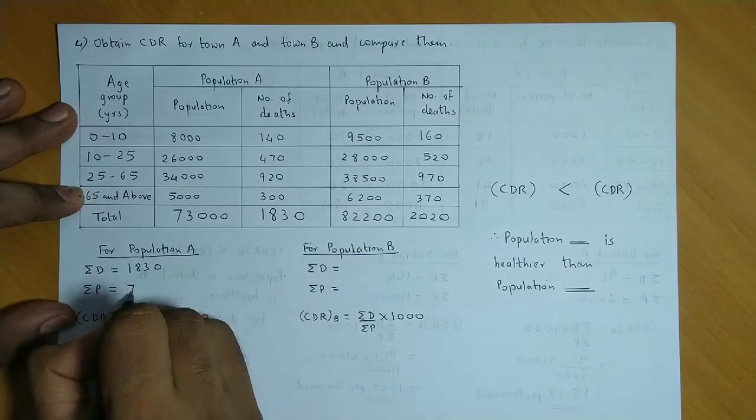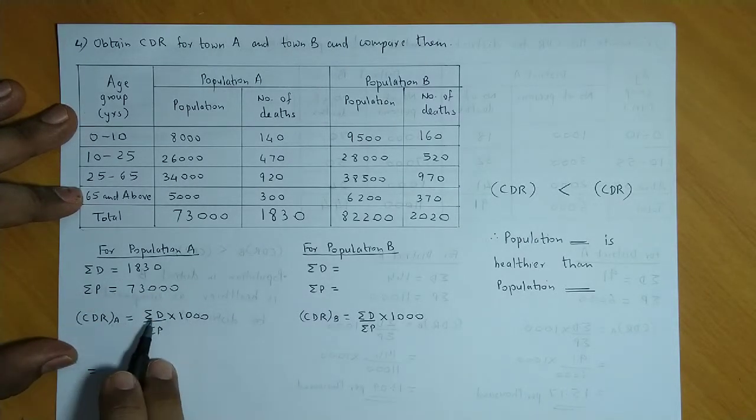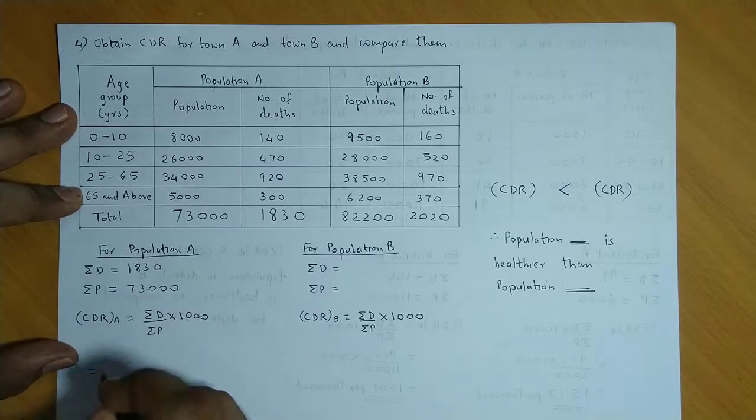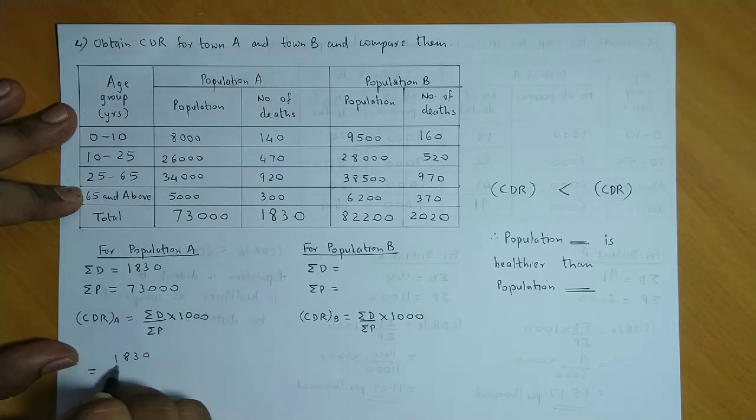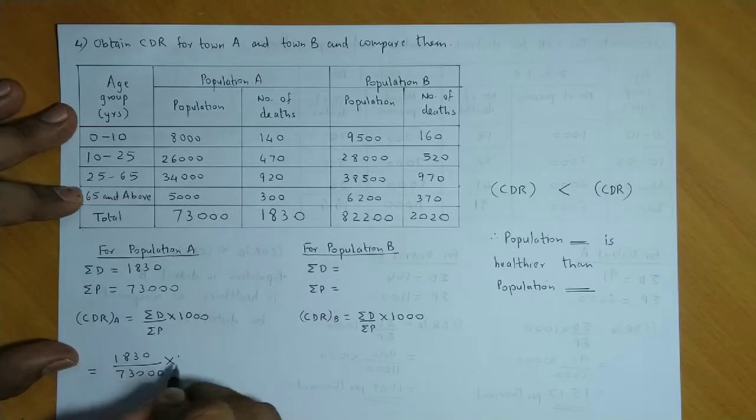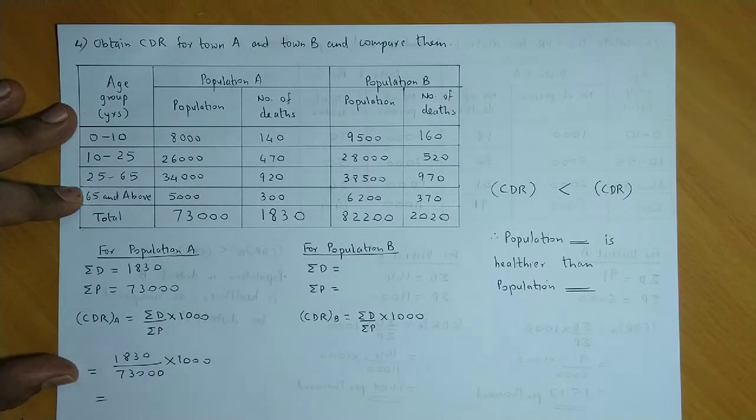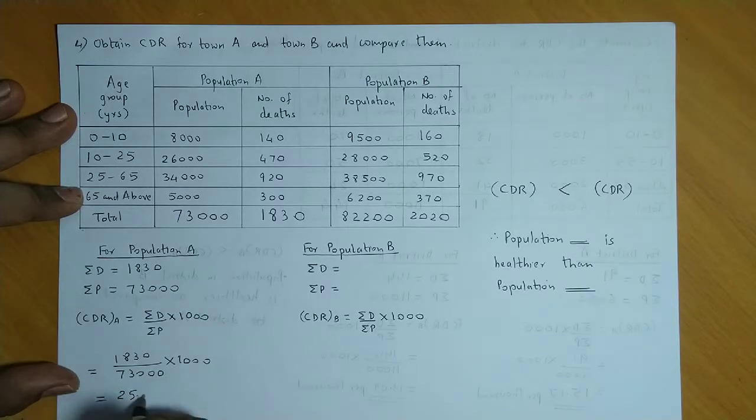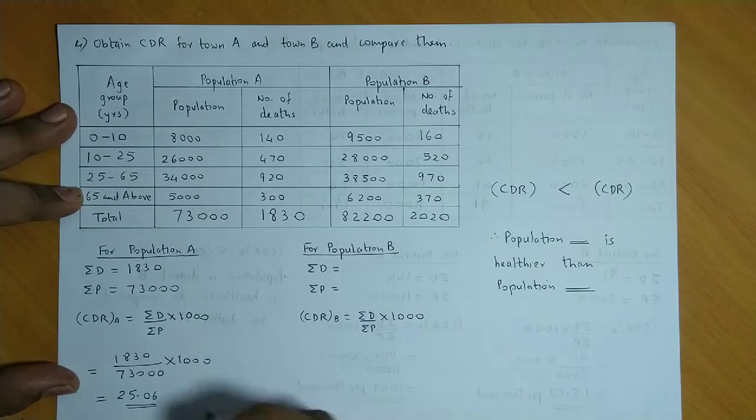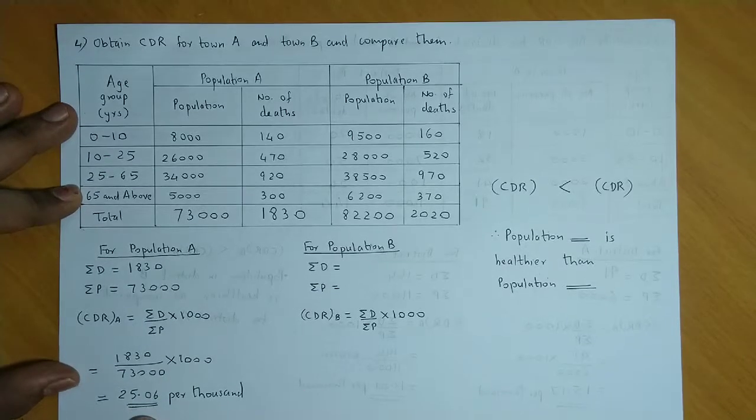Total population is 73,000. Now we substitute in CDR formula: summation D upon summation P into 1000. Summation D is 1,830, summation P is 73,000 into 1,000. Now these 3 zeros cancel out, so we get 1,830 divided by 73. The answer is 25.06. Again, CDR units are per 1,000, so CDR for A is 25.06.